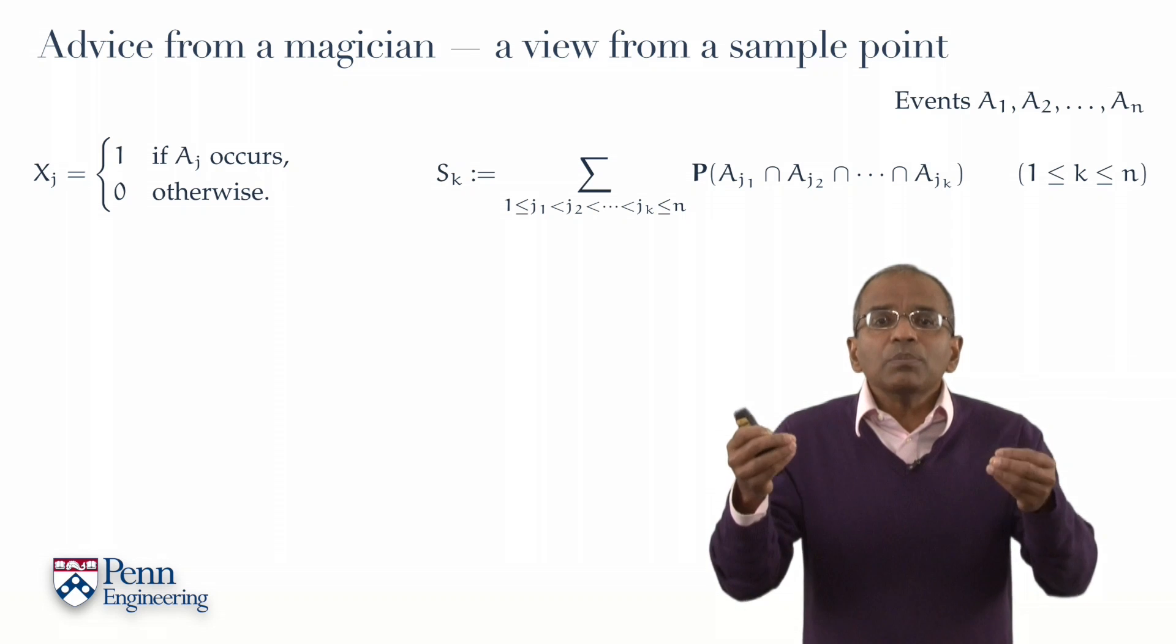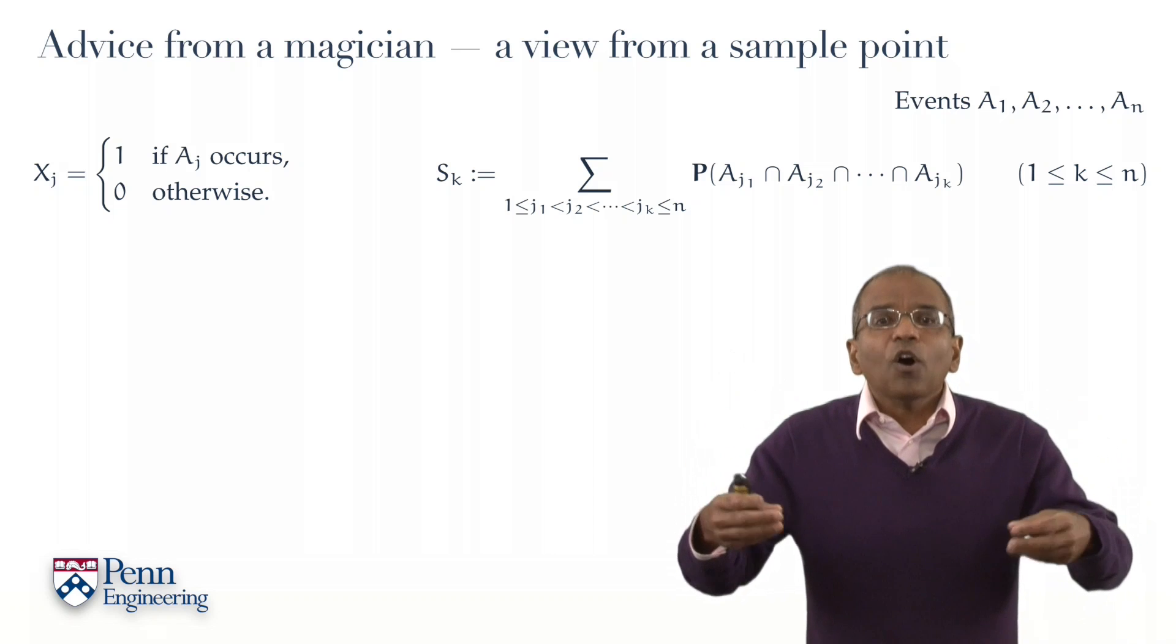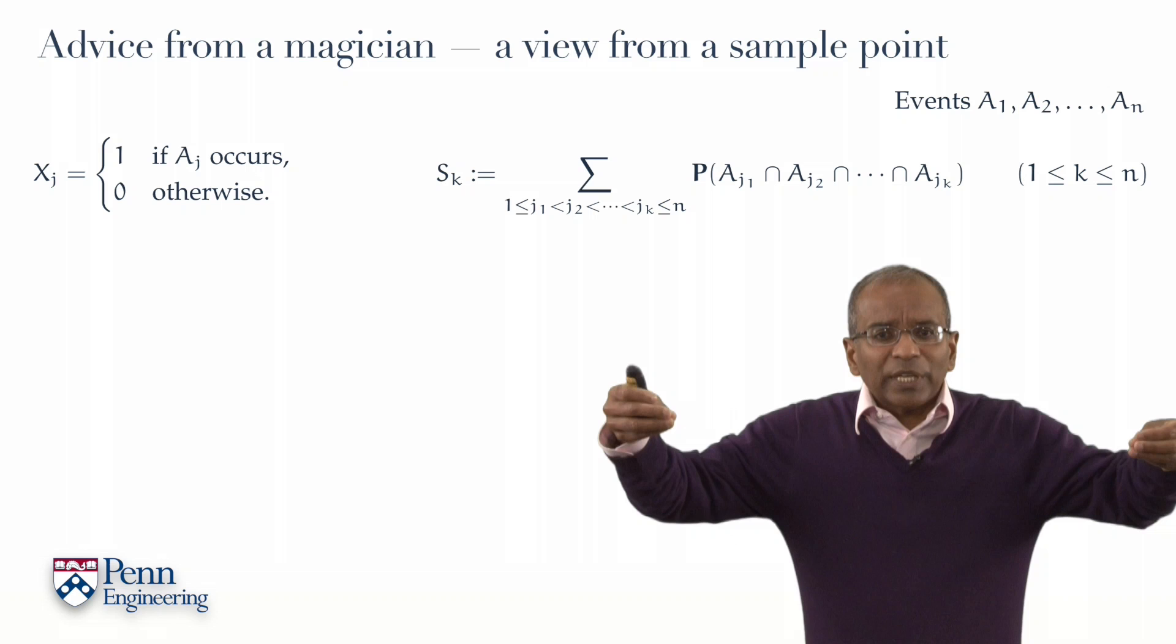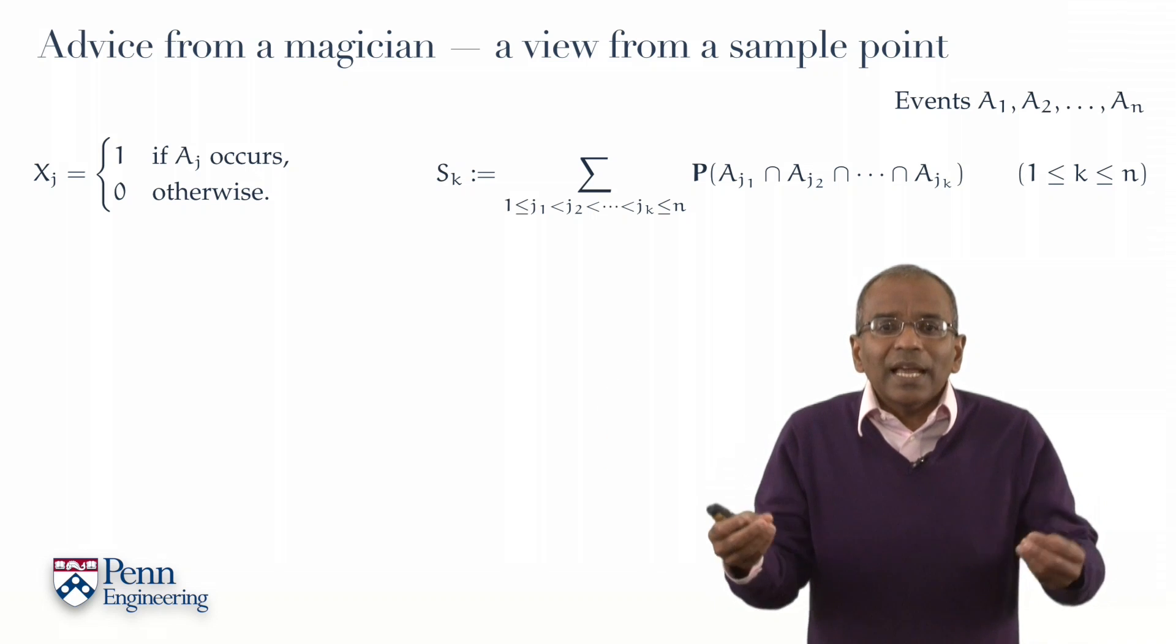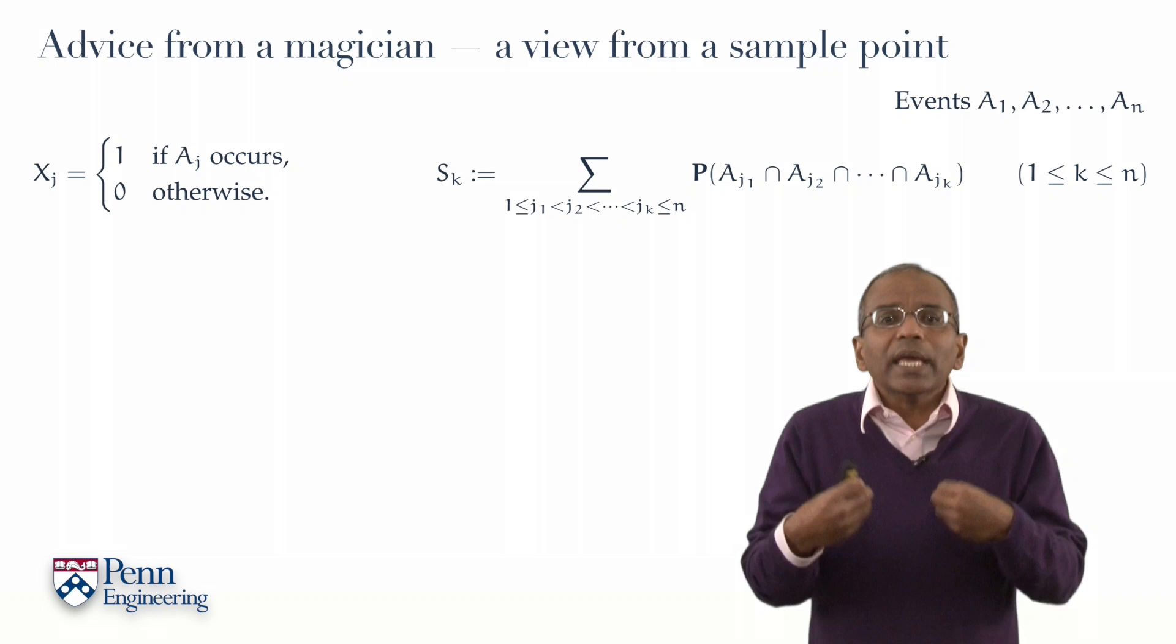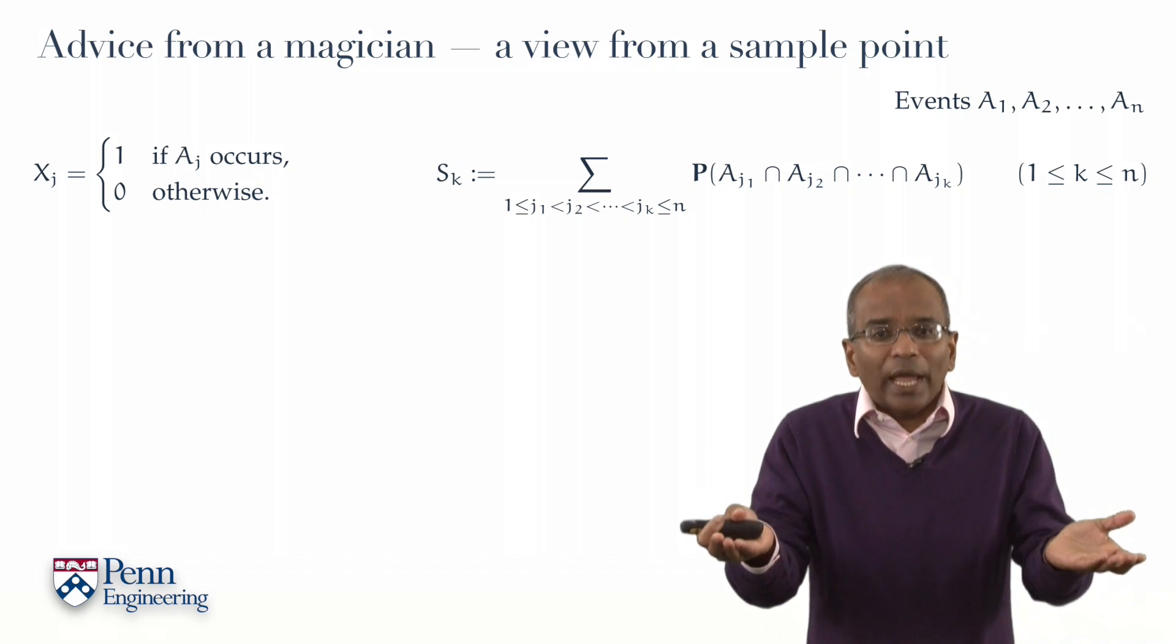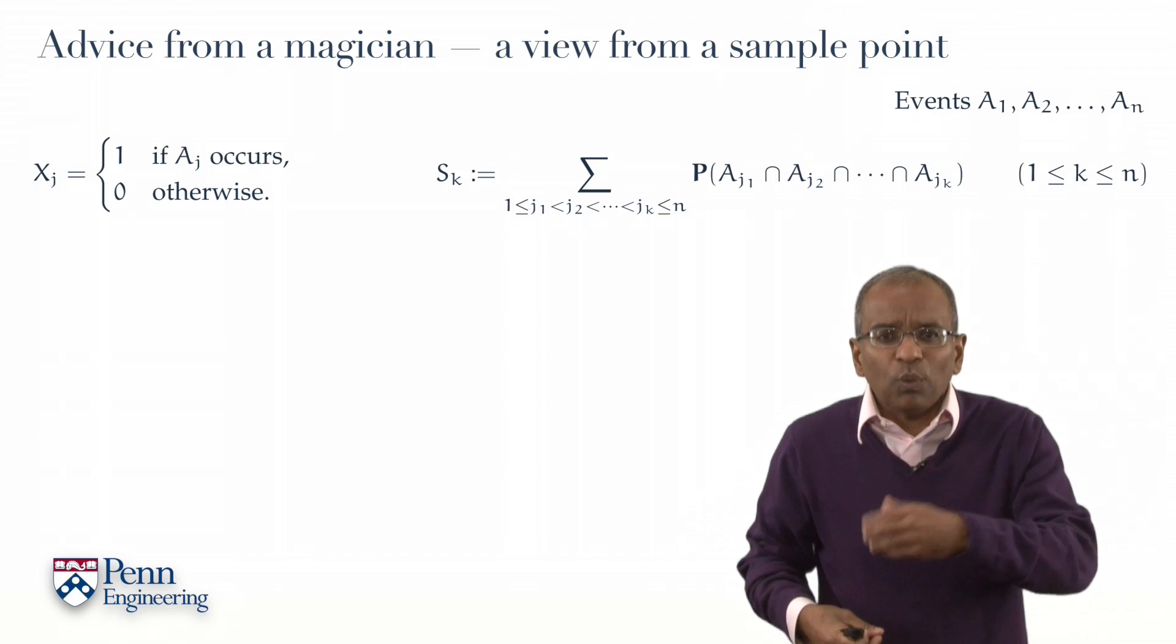Look at the probability of the intersection of those k events. Now, sum such probabilities over all choices of k events out of n. And that is all that that formidable-looking sum represents. Sk onwards is the sum of all k-wise intersection probabilities of the underlying events A1 through An. Of course, k here is a generic integer between 1 and n.